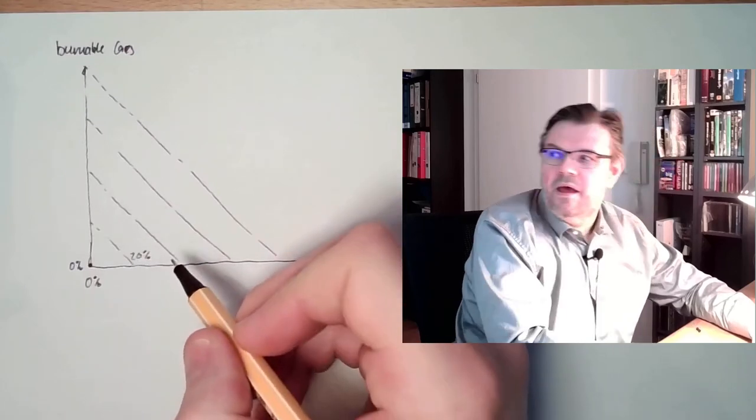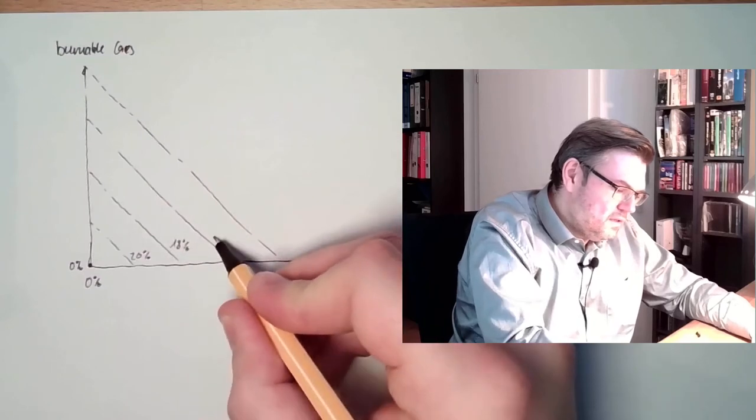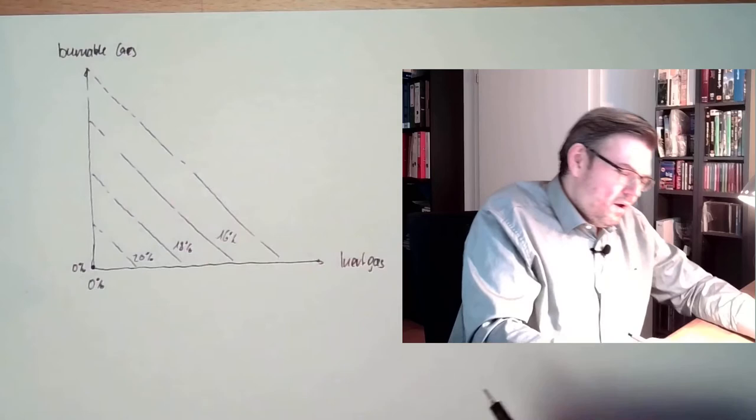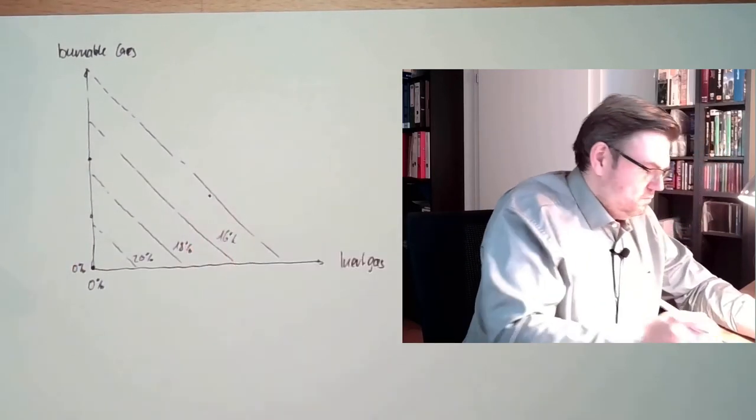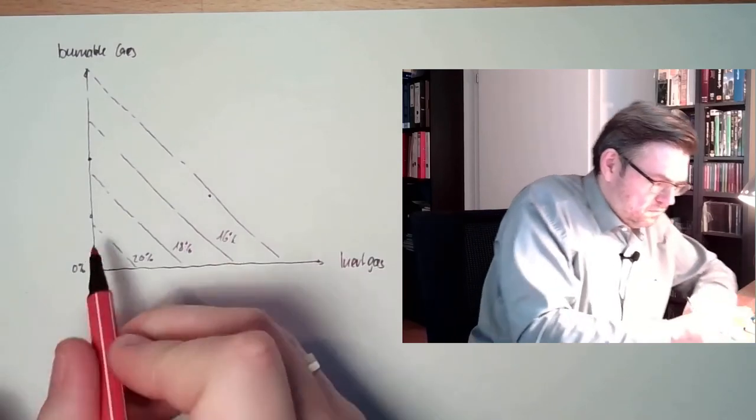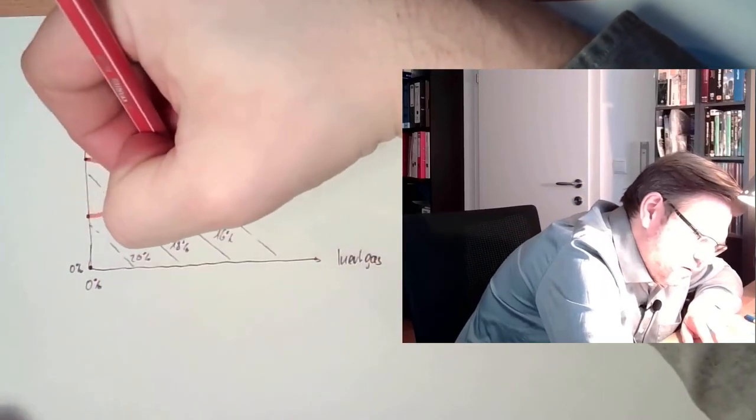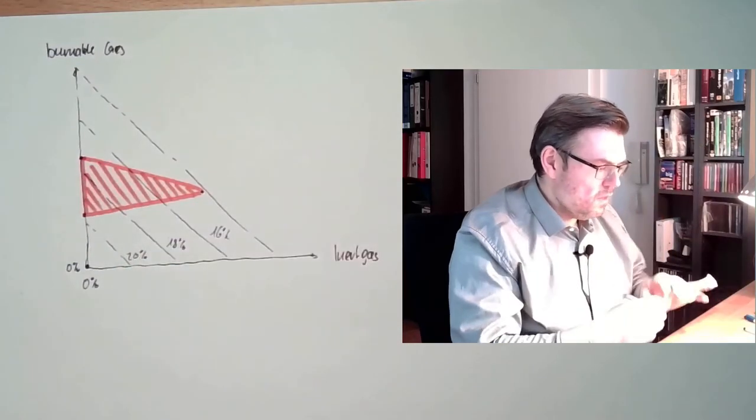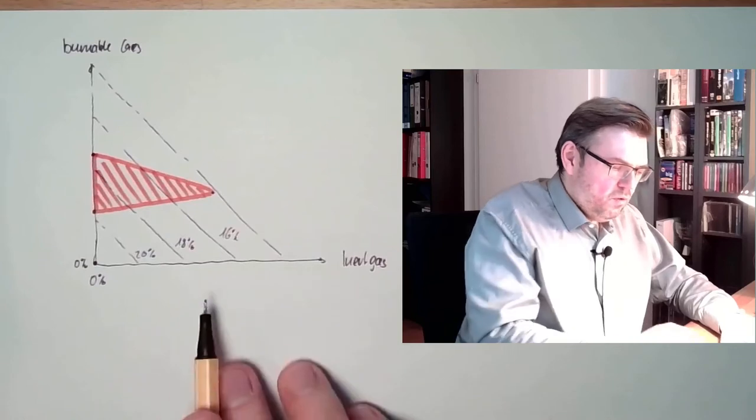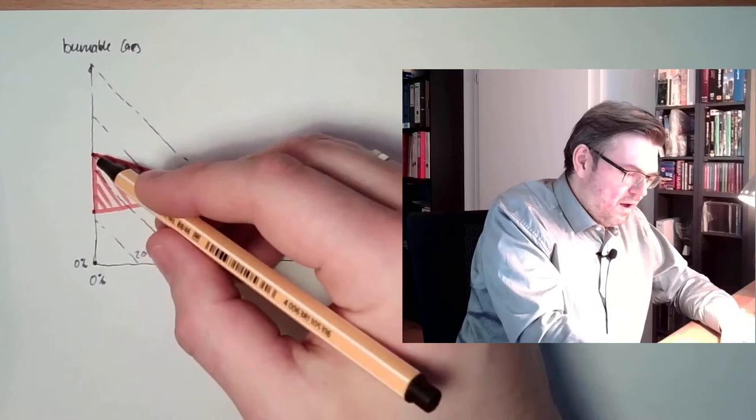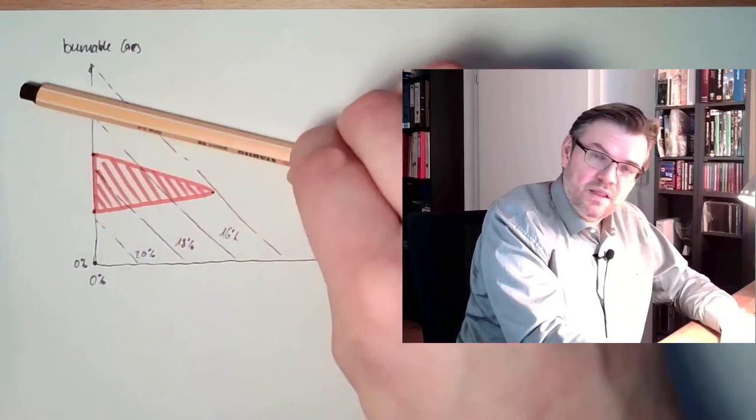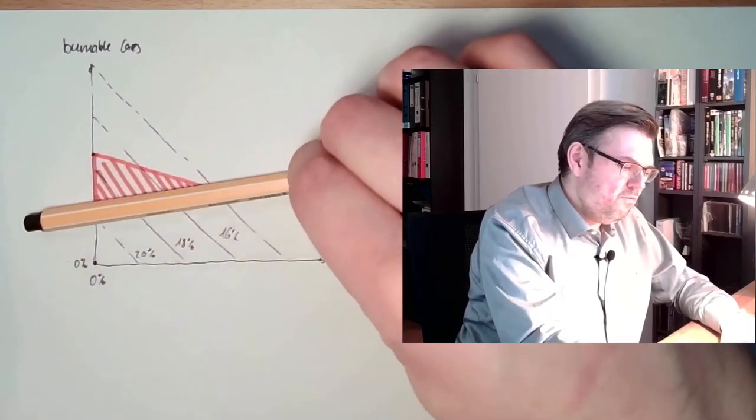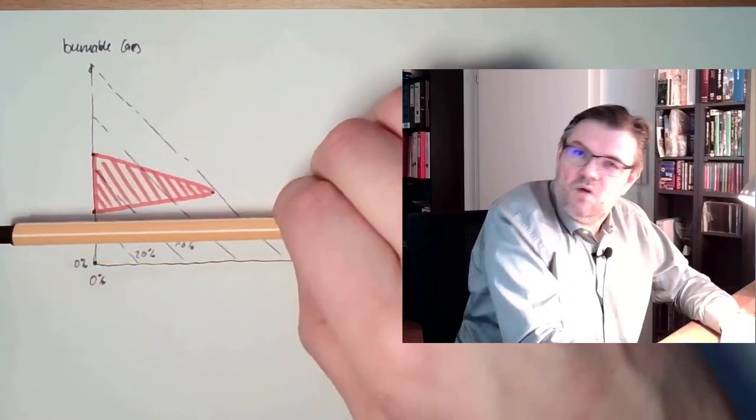The more inert gas, the less oxygen we have. The more burnable gas, the less oxygen we have. And if we have inert gas and burnable gas, we also have less oxygen, of course. So this is the oxygen. So here we have 20% oxygen, and here we have 18% and then 16% and so on. And we're going down, down, down with the oxygen concentration. And within a certain area here, this is the area where an explosion might happen.